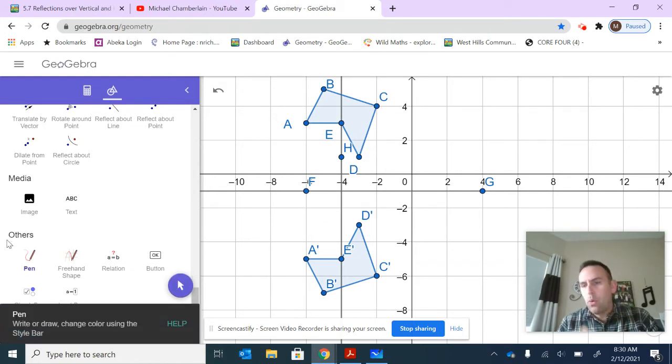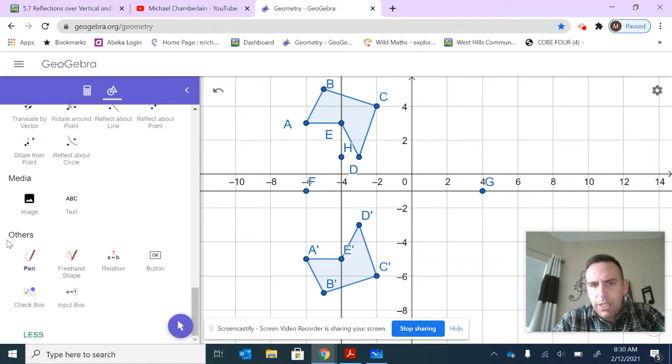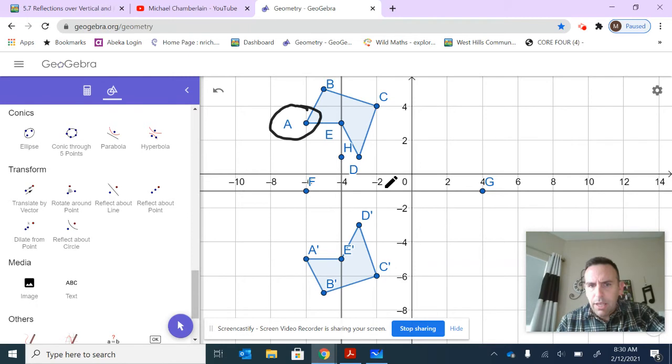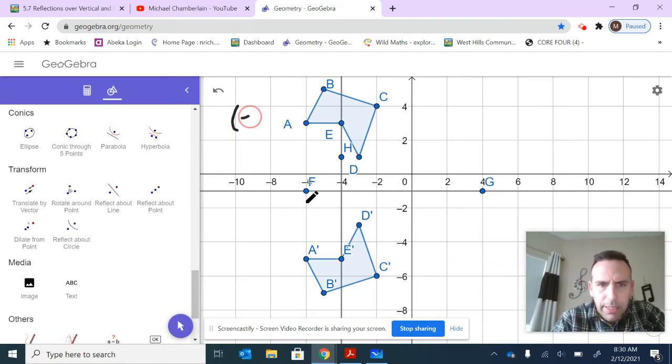Well, if we just examine one of the coordinates, it's probably enough. Let's take a look at point A right here. Where was A formally? Let's zoom in on that. It's back six and up three. It is back six and up three initially.